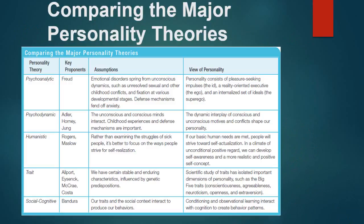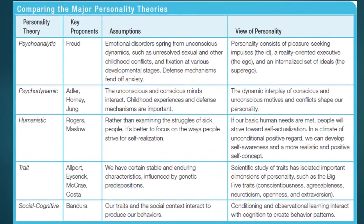When comparing the major personality theories: psychoanalytic is Freud; psychodynamic includes Adler, Horney, and Jung; humanistic is Rogers and Maslow; trait theory includes Allport, McCrae, and Costa — it's worth looking at McCrae and Costa in your textbook as they weren't covered much in the videos. The social cognitive theory is again Albert Bandura.